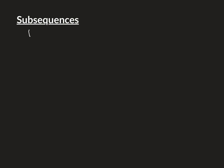So what is a subsequence? Let's say we've got a sequence, which we'll call the sequence A: A1, A2, A3, A4, A5, and so on. A subsequence is a sequence itself that is made by taking a subset of the terms from the original sequence.